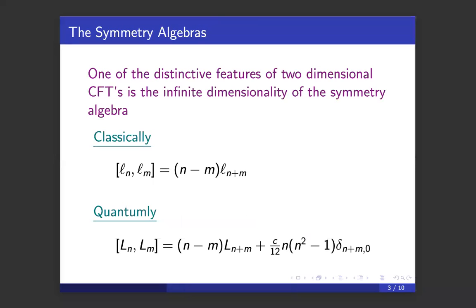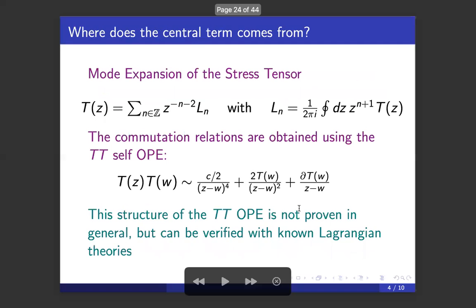One of the distinctive features of two-dimensional CFTs is the fact that the symmetry algebra is infinite-dimensional, which at the classical level or at the coordinate level satisfies the commutator algebra of the Witt algebra. Remarkably, when passing to the quantum theory, an extra term appears containing a central charge—which is, of course, the Virasoro algebra. We may wonder where does that central term actually come from.